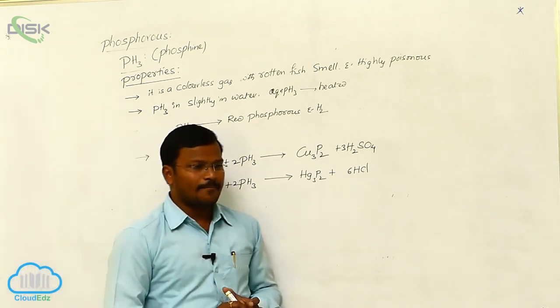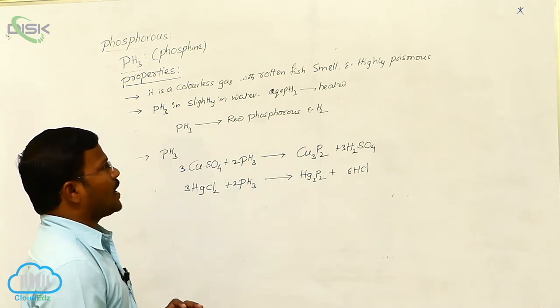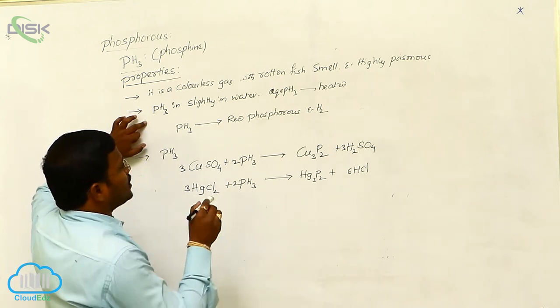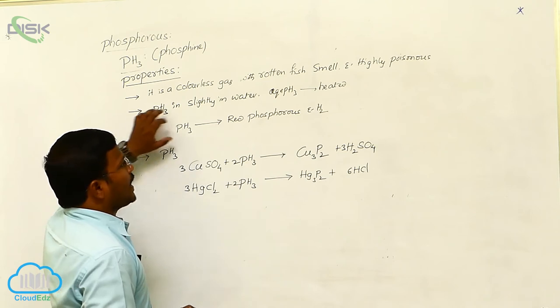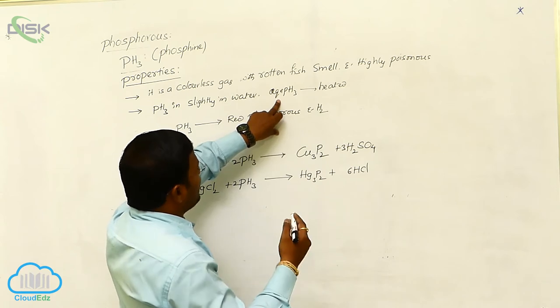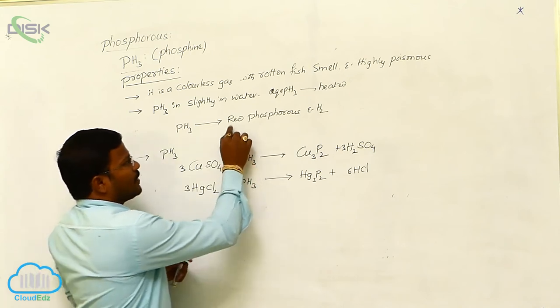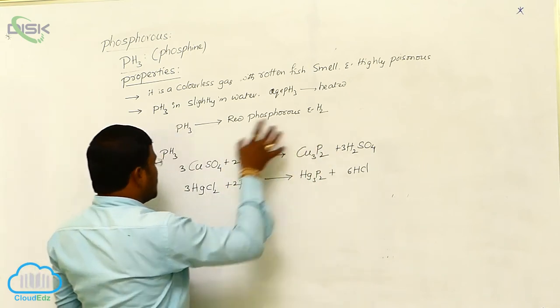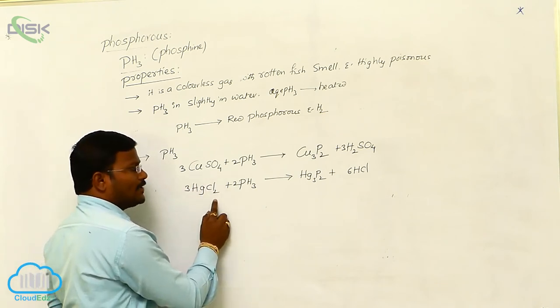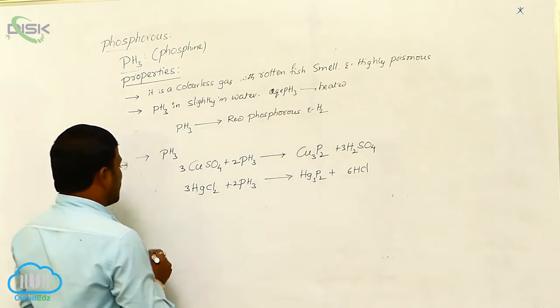Once again, phosphine is a colorless gas with rotten fish smell and it is highly poisonous. Similarly, it is less soluble in water and the aqueous PH3 when heated at high pressure condition dissociates and produces red phosphorus and hydrogen gas. Similarly, the phosphine may react with copper sulfate and mercuric chloride to produce copper phosphide and mercuric phosphide.